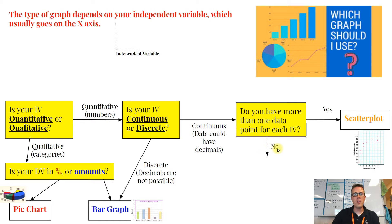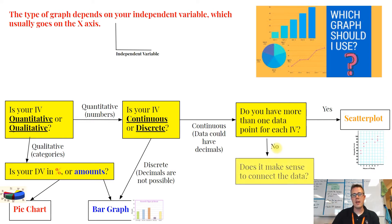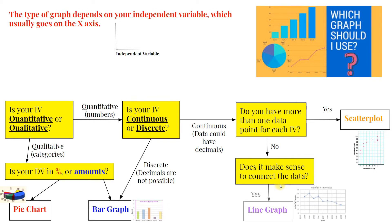If you could only possibly have one point for each independent variable — like if you're graphing an average for that plant experiment — well, if you're averaging everything, you're only going to have one number for each amount of water. So in that case, you need to ask one more question: would it make sense to connect the dots? If you say yes, you're going to make a line graph.